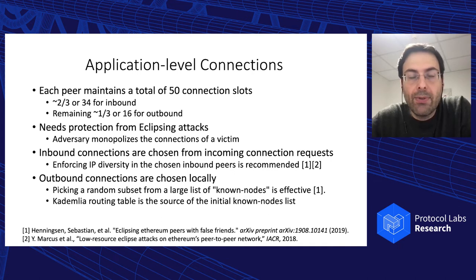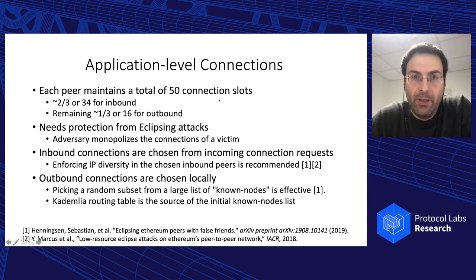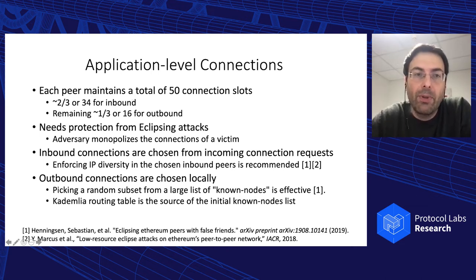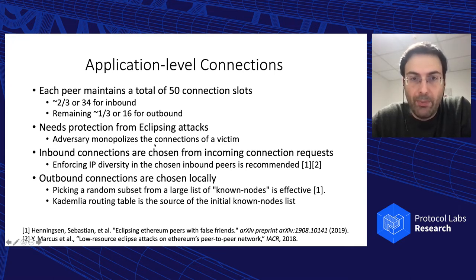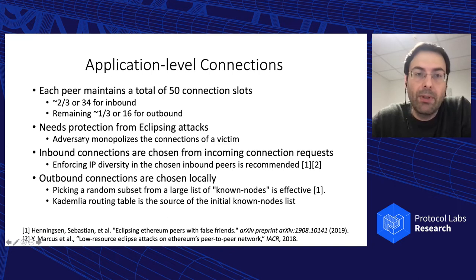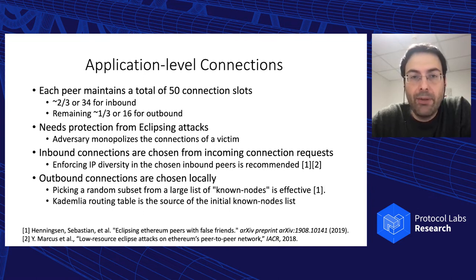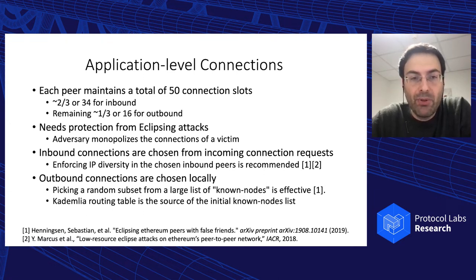One important objective is security. In Ethereum, each peer maintains a total of 50 connection slots — some outbound and some inbound. These small number of connection slots need to be protected from eclipsing attacks. In an eclipsing attack, an adversary together with its Sybils monopolizes the connections of a victim, and once it achieves this, the adversary can feed the victim any information it wants. There is existing work to prevent eclipsing attacks, some of which we also use in our work.